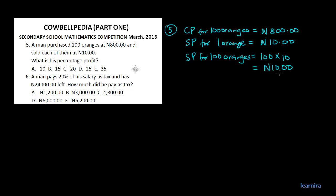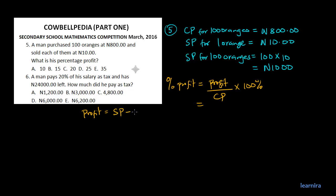The selling price for 100 oranges equals 1,000 naira. The percentage profit formula is: profit divided by cost price, times 100%. And profit is always selling price minus cost price. So percentage profit equals (selling price minus cost price) divided by cost price, times 100%.